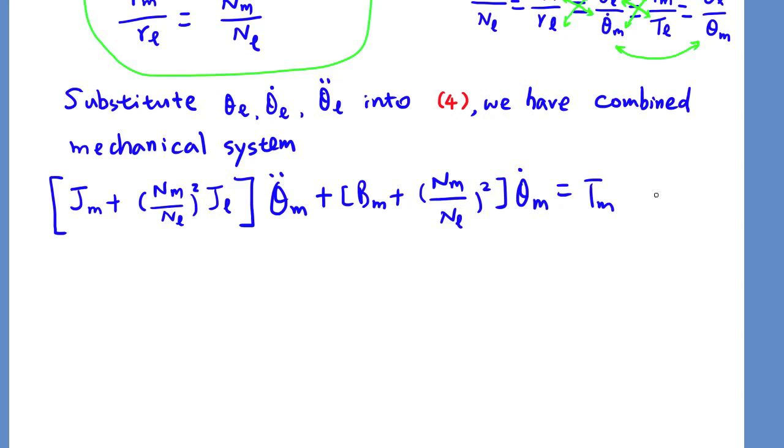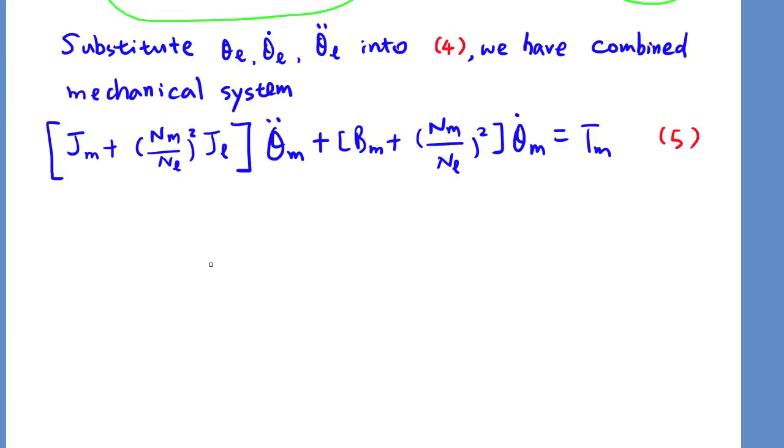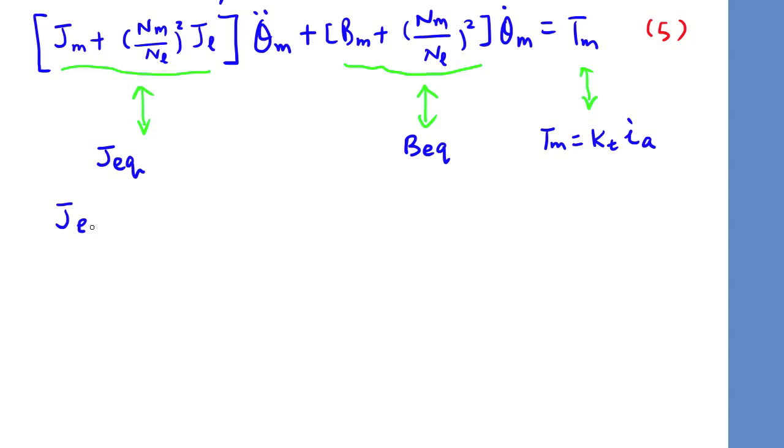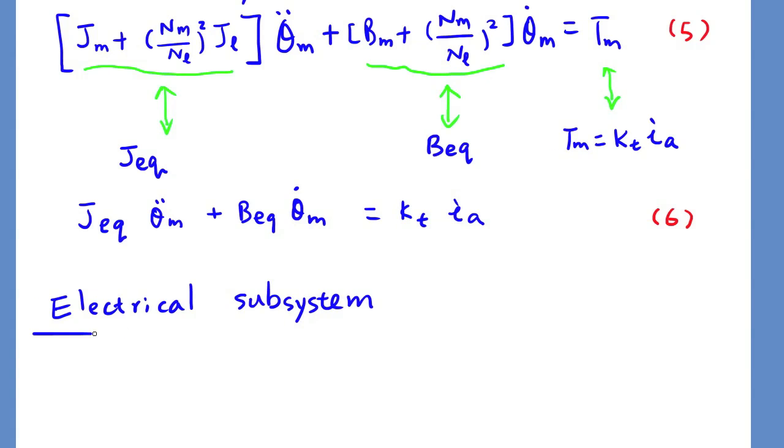Now we can see the contribution from robot arm load to moment of inertia on damping torque is reflected to motor shaft, which is proportional to square of gear ratio. Let's name this equivalent moment of inertia and equivalent damping coefficient. And here, torque moment can be obtained by the armature current times the torque constant kT.